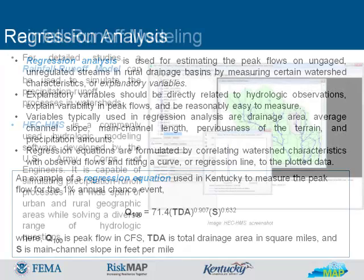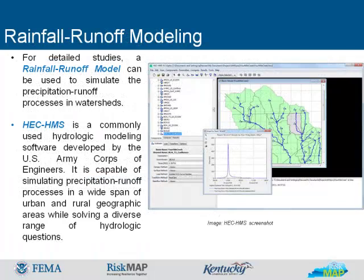Regression equations are formulated by correlating watershed characteristics with observed flows and fitting a curve or regression line to the plotted data. For detailed studies, a rainfall runoff model can be used to simulate the precipitation runoff processes in watersheds. Hydrologic Engineering Center's Hydrologic Modeling Software, or HEC-HMS, is a commonly used hydrologic modeling software developed by the U.S. Army Corps of Engineers. It is capable of simulating precipitation runoff processes in a wide span of urban and rural geographic areas while solving a diverse range of hydrologic questions.